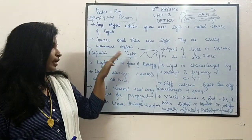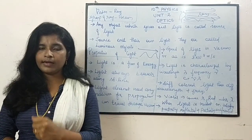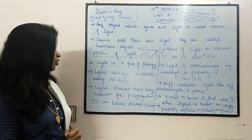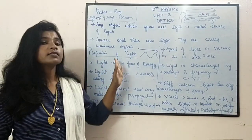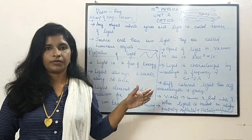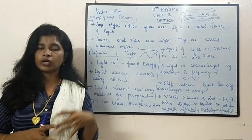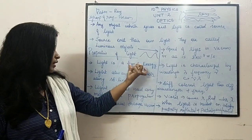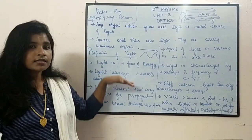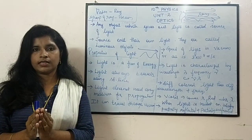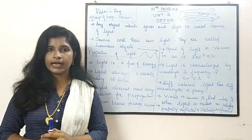Properties of light is a very important question. The first property is: light is a form of energy. It was found out by the scientist Einstein, and because of this he got the Nobel Prize — this is for your information. So, light is a form of energy. Light always travels along a straight line.